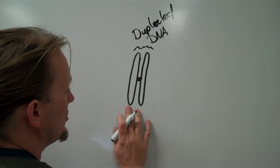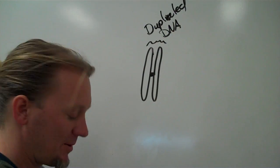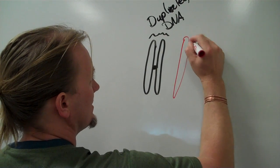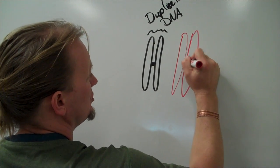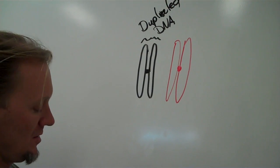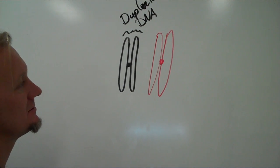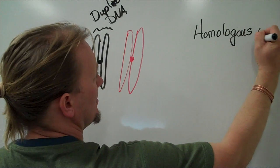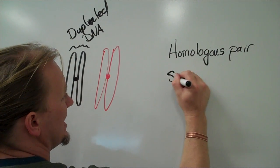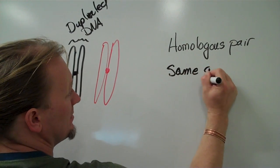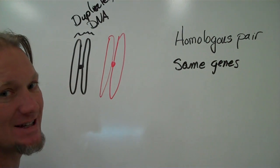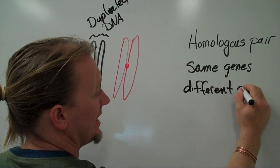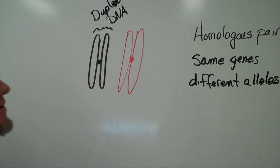Now, as you know, we have a pair of every type of chromosome out there. So I'm going to give you a black one like this, and a red one like this. This is also duplicated DNA. We call this pair homologous. Homologous pair. They have the same genes on them. Different alleles. Sometimes the same alleles, but they may have different alleles.